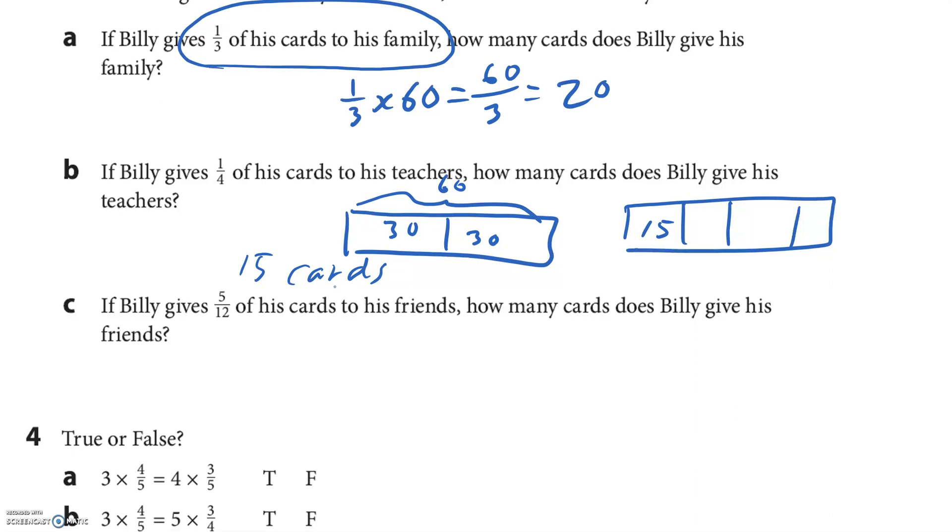If Billy gives five-twelfths of his cards to his friends, how many cards does Billy give his friends? So five-twelfths of sixty. I could change to sixty over twelve times five. Twelve goes into sixty, I recognized it as five. Five times five is twenty-five cards.